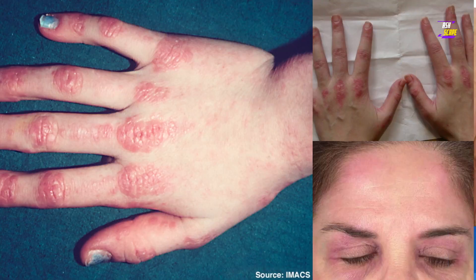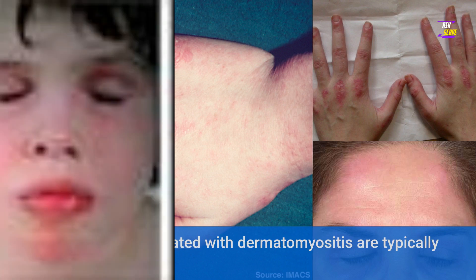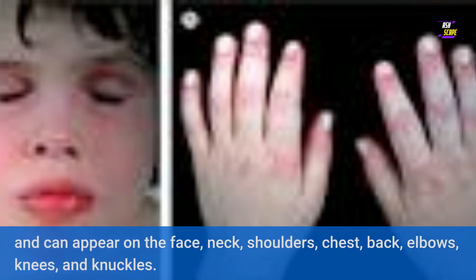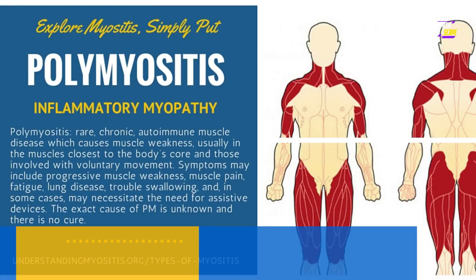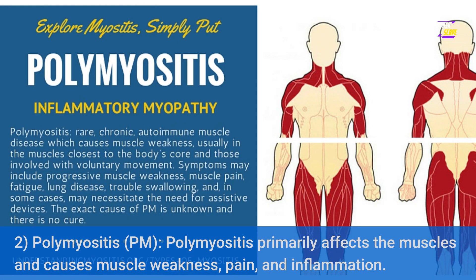The skin rashes associated with dermatomyositis are typically reddish or purplish and can appear on the face, neck, shoulders, chest, back, elbows, knees, and knuckles. 2. Polymyositis (PM) — polymyositis primarily affects the muscles and causes muscle weakness, pain, and inflammation.